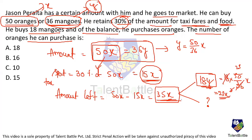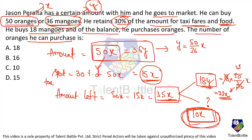With 10X rupees remaining and each orange costing X rupees, he can buy 10X ÷ X = 10 oranges. So the answer is Option C — 10 oranges.